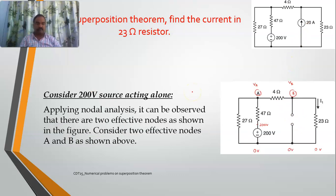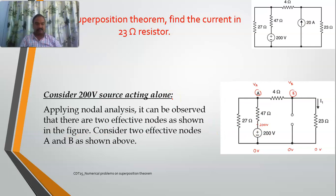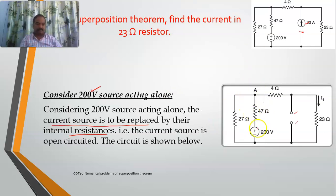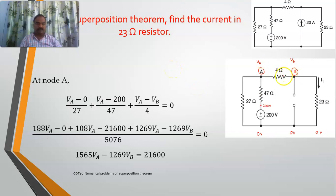The current source is open-circuited. Now I will apply nodal analysis. I take the bottom as 0 volts and this is my 200 volts. I take node A and node B, which is vb. Applying nodal analysis at node A, there are three paths: va divided by 27, va minus 200 divided by 47, and va minus vb divided by 4, all equal to 0.